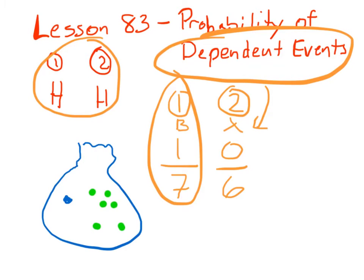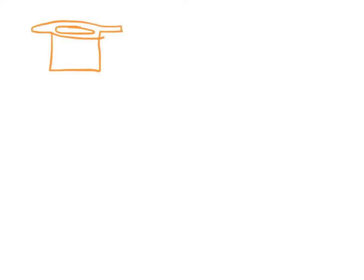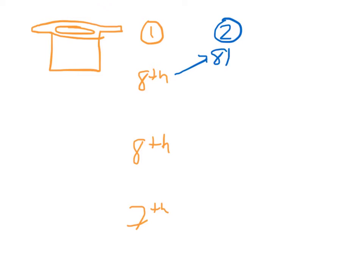Let's look at example one. Two eighth graders and one seventh grader want to go on the trip, but only two students will be selected. If their names are drawn at random, what is the probability that the two eighth graders will get to go? So here we've got a hat and kids' names could be pulled out of it. There are three kids. On the first pull, you could get an eighth grader, the other eighth grader, or the seventh grader. Then on the second pull, if you got an eighth grader first, you could still get another eighth grader, or you might get the seventh grader.